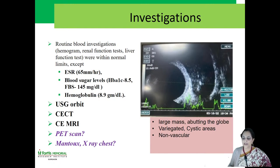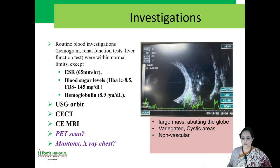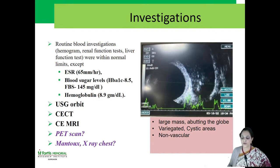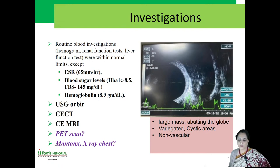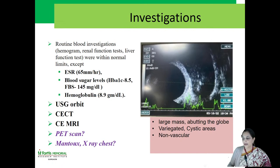Routine blood investigations were normal except for raised ESR, HbA1c of 8.5, fasting blood sugar of 145, and hemoglobin of 8.9 g%. Ultrasound of the orbit showed a large mass abutting the globe with cystic areas and was non-vascular.